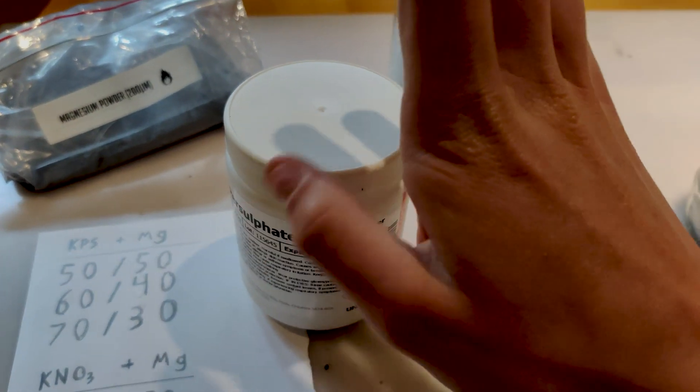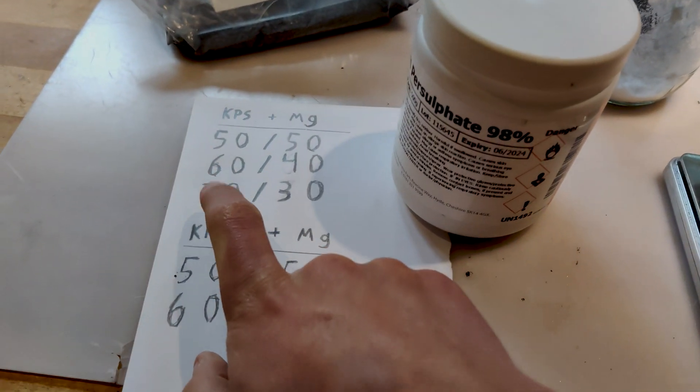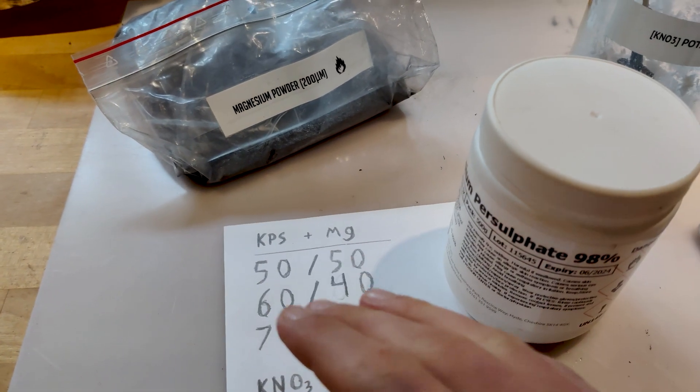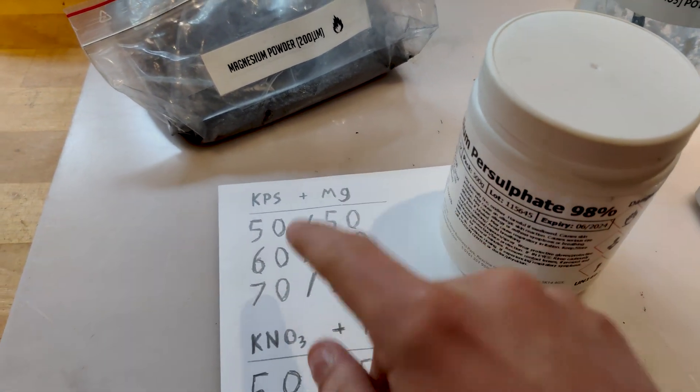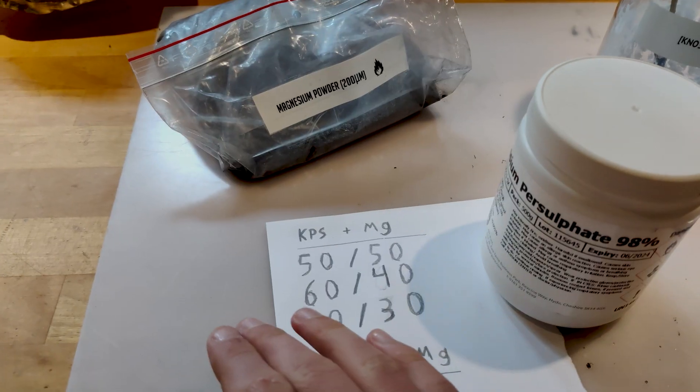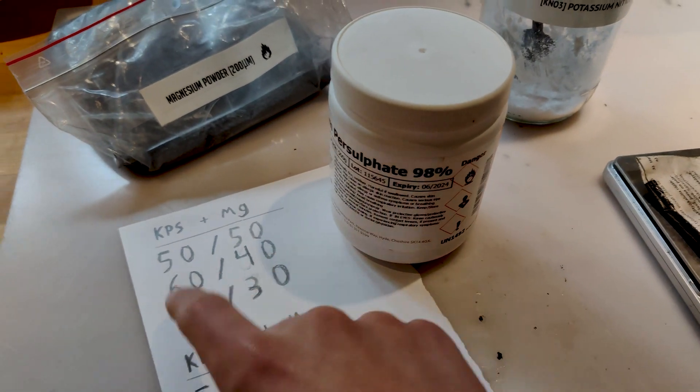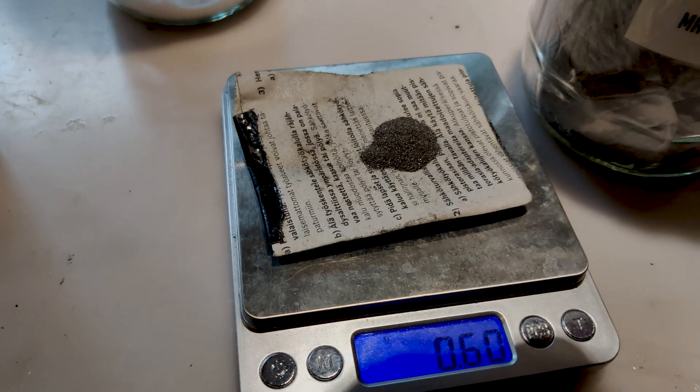Well it depends which ratio. I think I'll try this one actually, I haven't tried that. So to get two grams of potassium persulfate flash I would need 0.6 grams magnesium and 1.4 grams of potassium persulfate. I basically just multiplied these numbers by two. That is about right, right on.